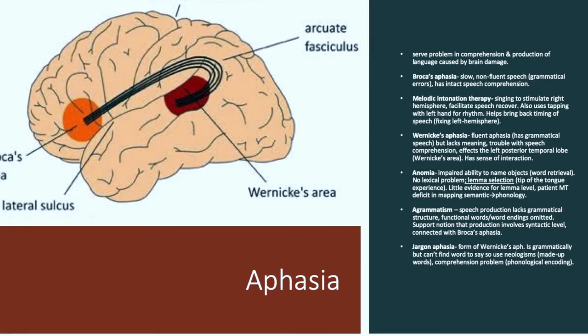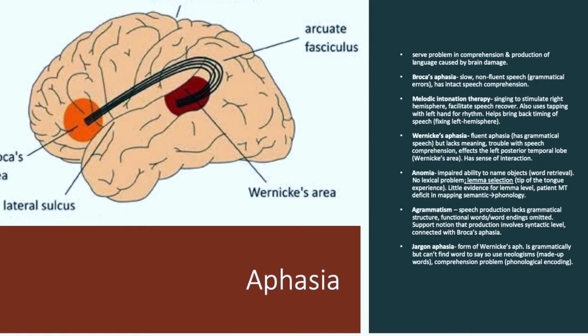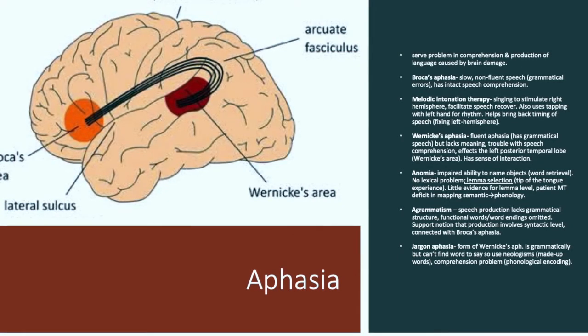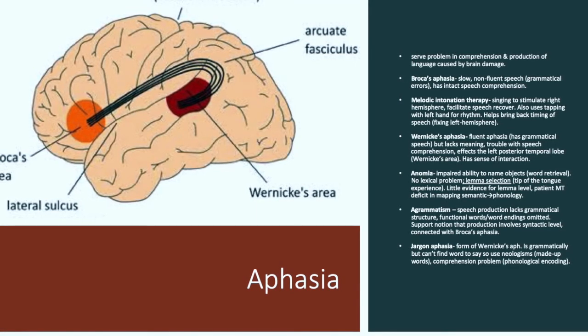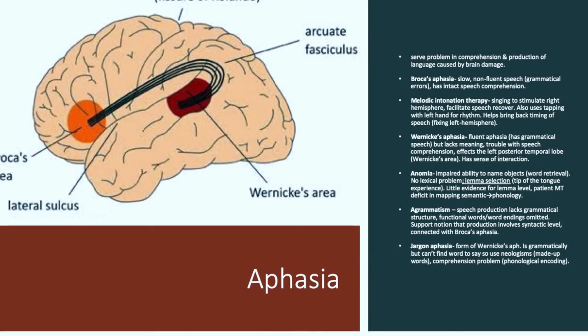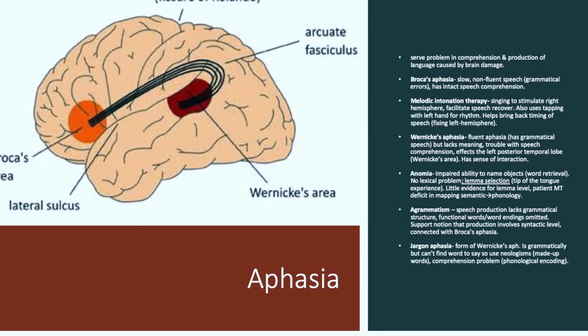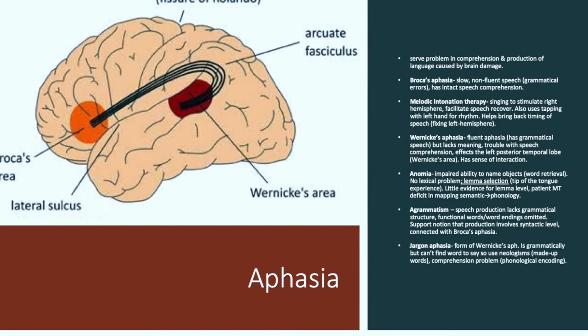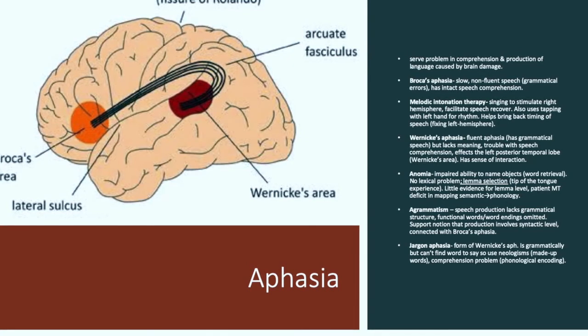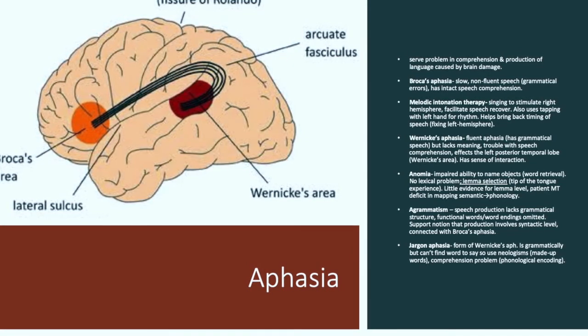Wernicke's aphasia. This is a form of fluent aphasia, which has grammatical speech, but lacks meaning. And thus there is trouble with speech comprehension. It affects the left posterior temporal lobe, or Wernicke's area, thus being called Wernicke's aphasia. There is a sense of interaction, or of associations taking place, but there is just no meaning.